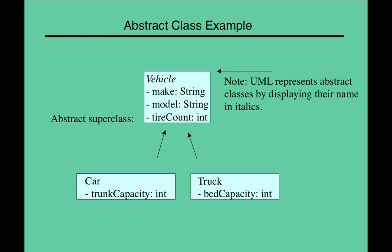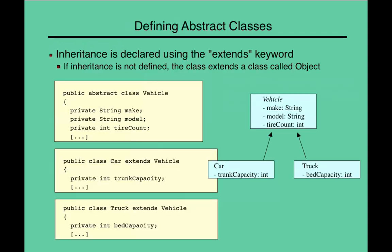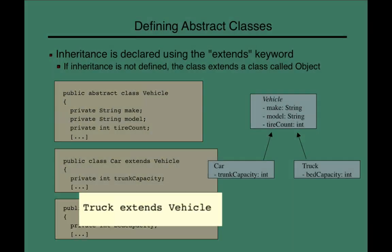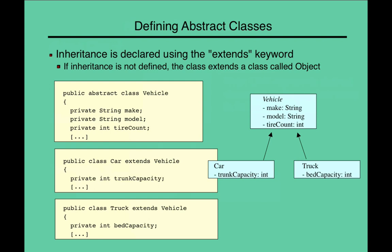So, when you create an abstract UML, you would list the title in italics, which shows that it's not actually a real class to be implemented, but it is something that is to be inherited. Here's what it looks like in Java. So, we would use the word extends. You notice here for the car. Car extends vehicle. Truck also extends vehicle. Both the car and the truck have the properties of vehicle, such as make, model, and tire count. But only the car gets to have a trunk, and only the truck gets to have a bed capacity. So, the extends tells us that we're using an abstract class. These two at the bottom are referred to as concrete classes.